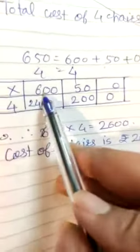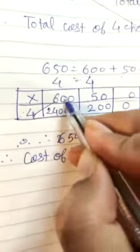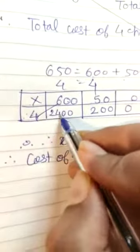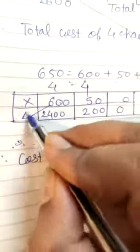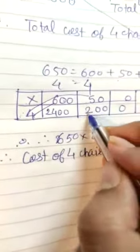Now into, 650 is 0, 4. First multiply this. Zero, zero. 6 fours are 24. Now multiply this. How many zeros? 1 zero. 4 fives are 20.